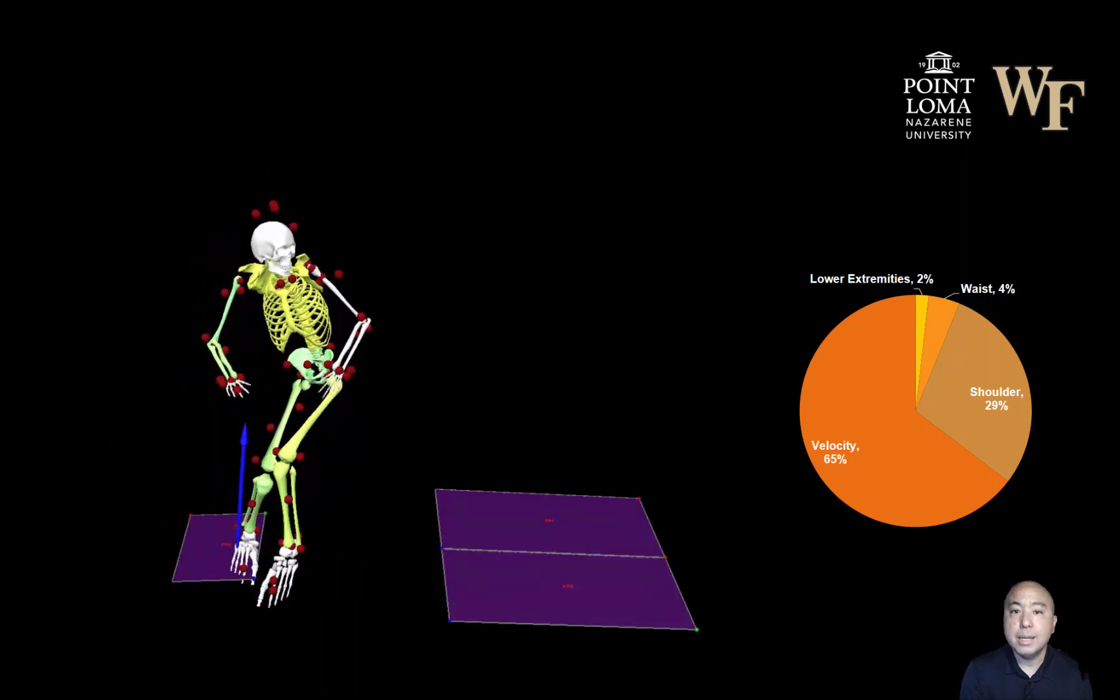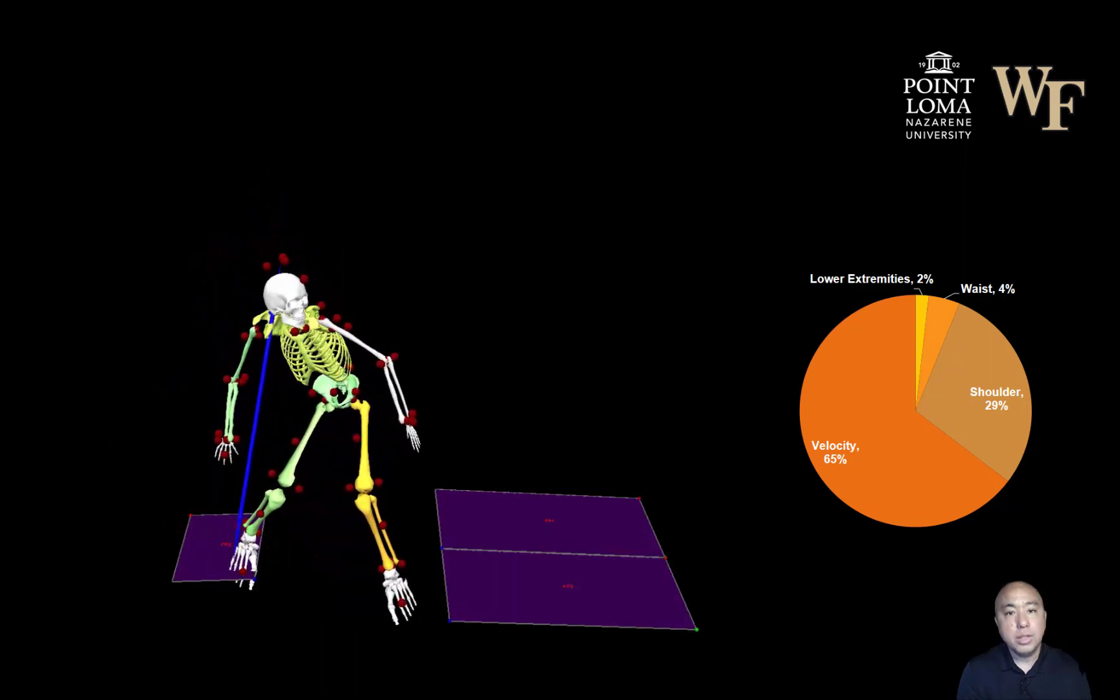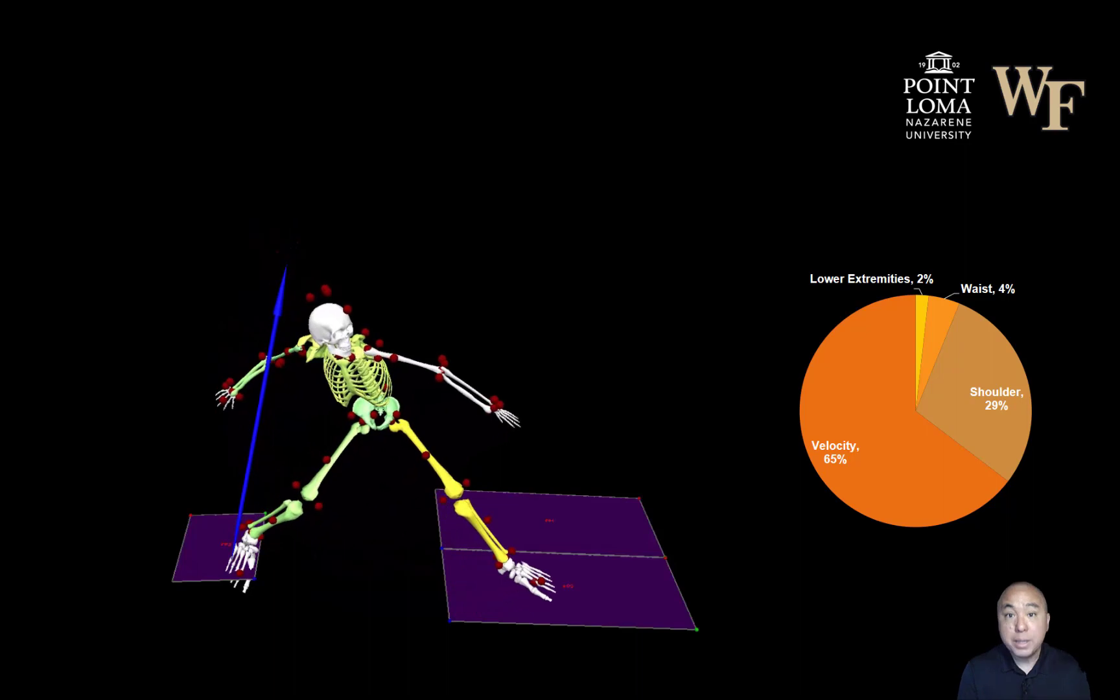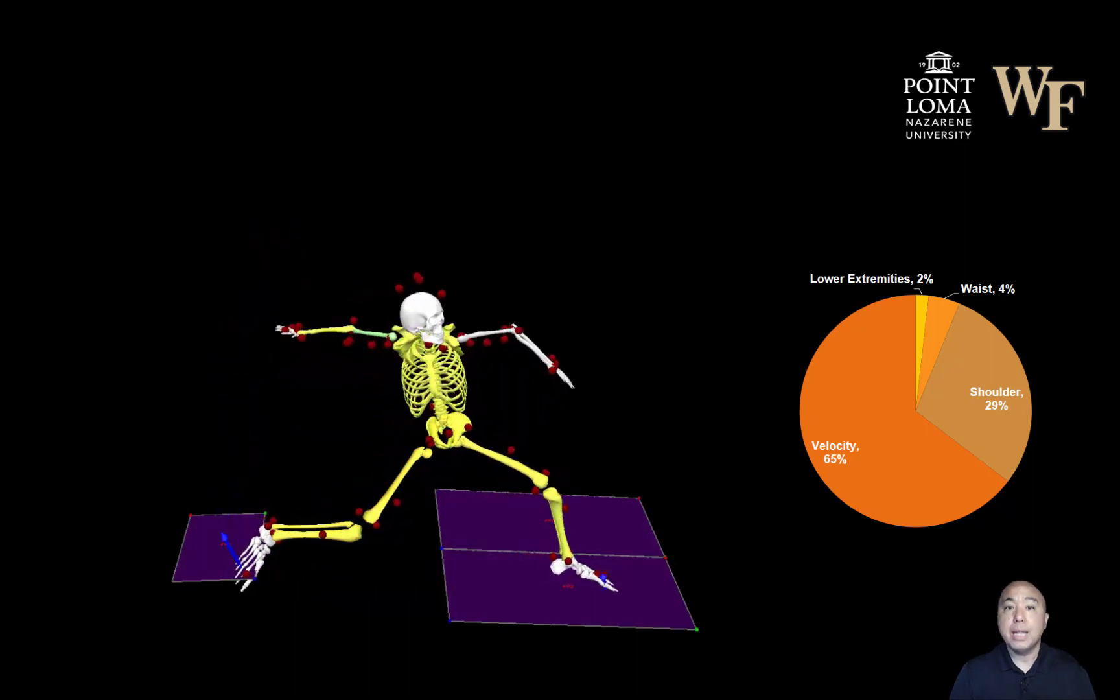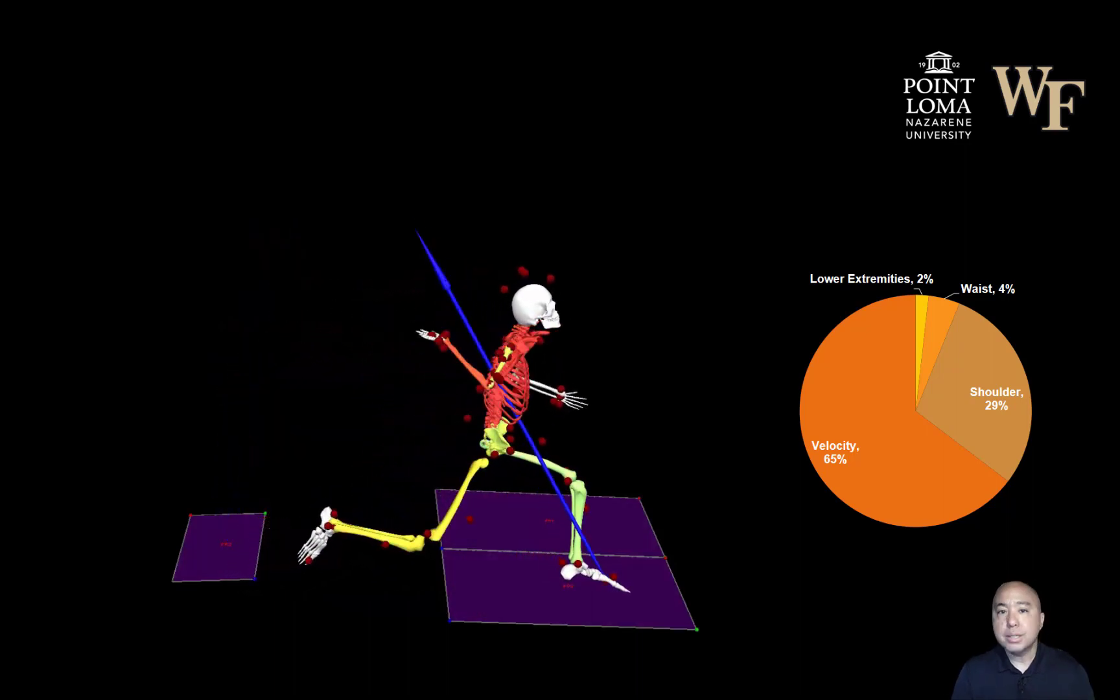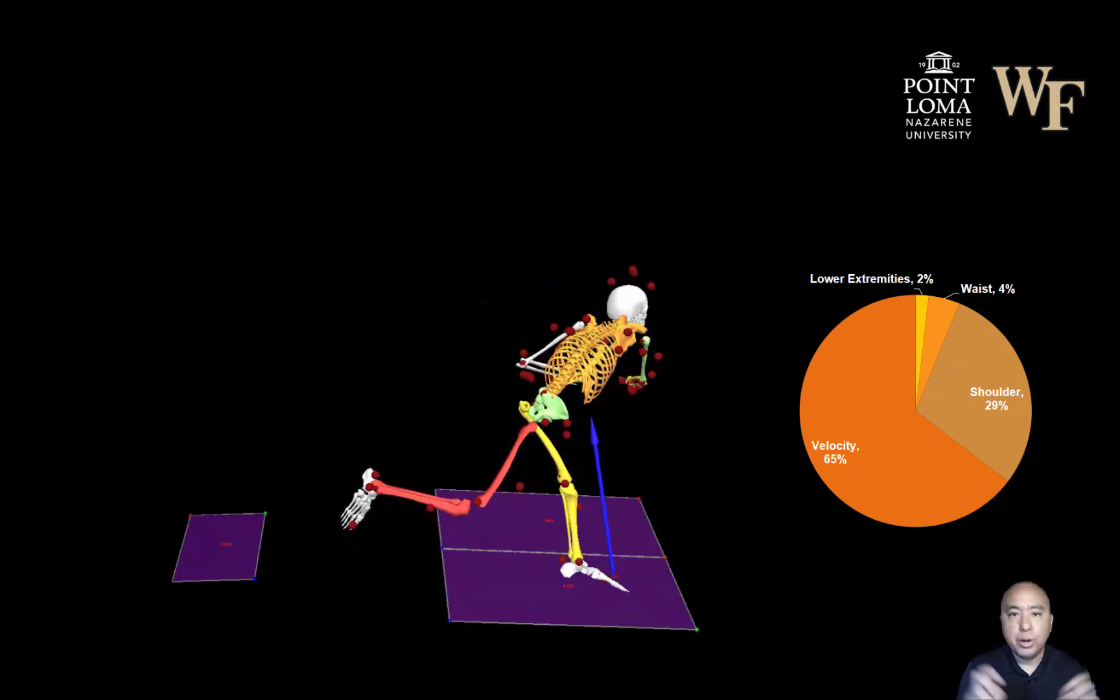So if you think about baseball pitching, it's an open kinetic chain, it acts much like a whip. So the torques that are generated earlier in the kinetic chain with the pelvis and trunk are manifested through this velocity dependent torque.